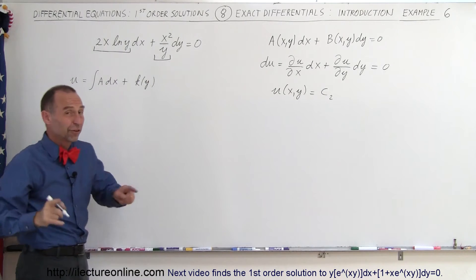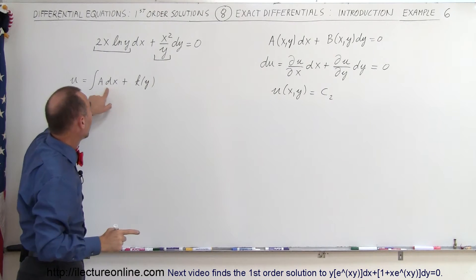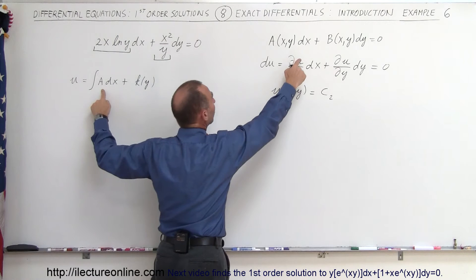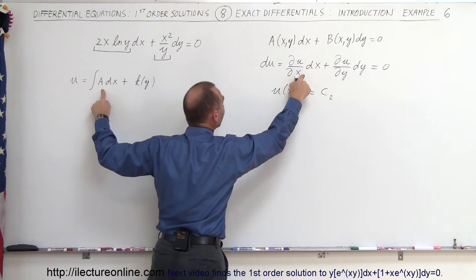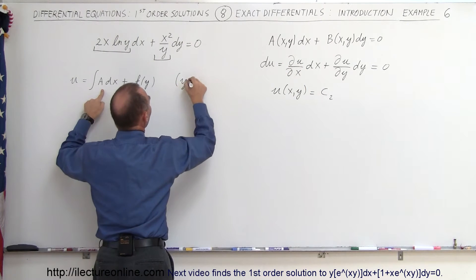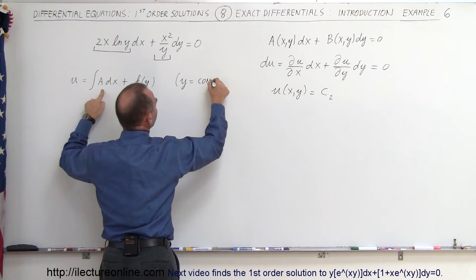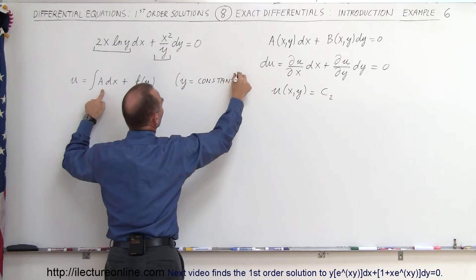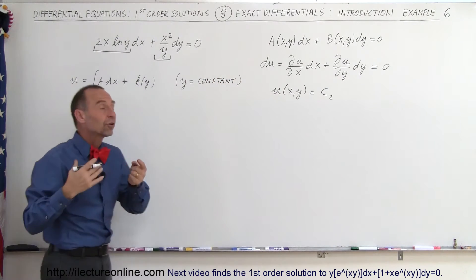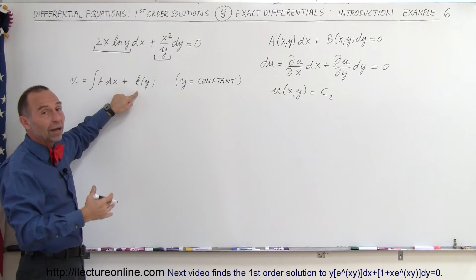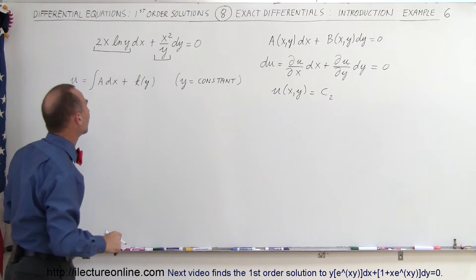Now, why is the constant of integration a function itself? That's because A was obtained by taking the partial derivative of u with respect to x, which means that y had to be treated as a constant. When integrated, we have to account that any function of y will survive and become the constant of integration.